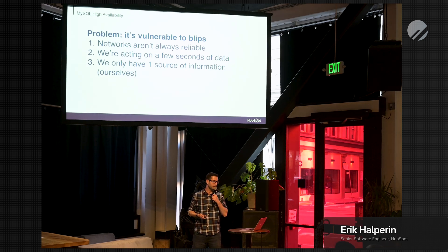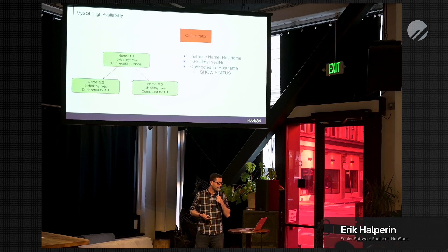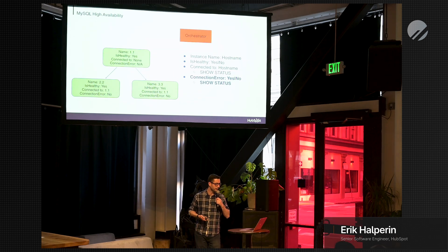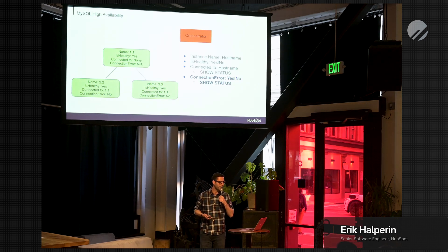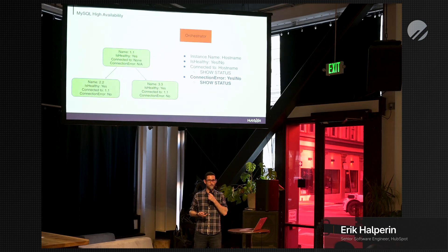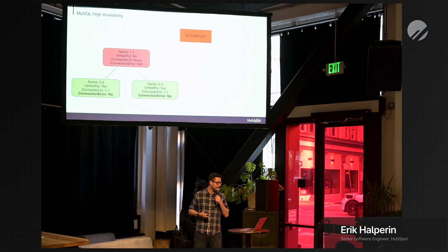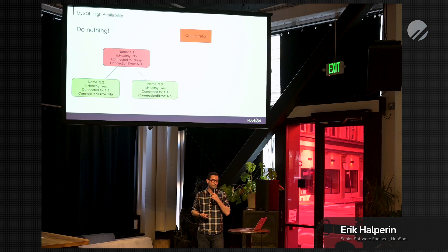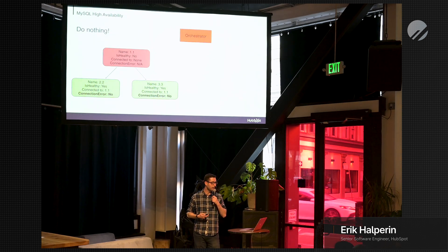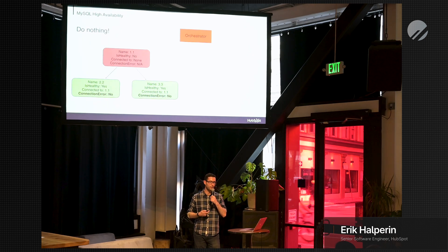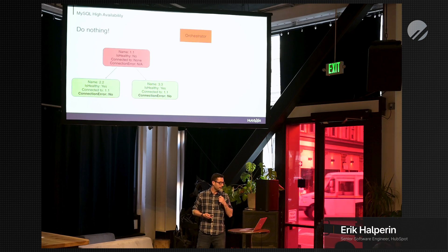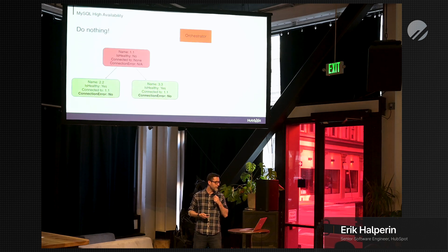We can address the single-source-of-information problem by adding a new field: 'connection error,' also a Boolean yes or no, which comes conveniently from the SHOW STATUS command. In a situation where the primary dies and becomes unhealthy, both replicas will report that they have a connection error. So now orchestrator will not do anything, because we assume orchestrator itself may have an unreliable view of the world — it may be experiencing network problems itself. All the situations I'm describing have happened to us — these are problems we've dealt with.